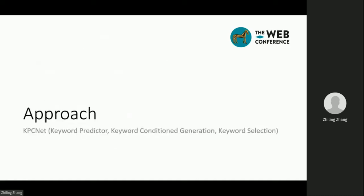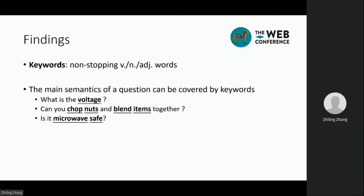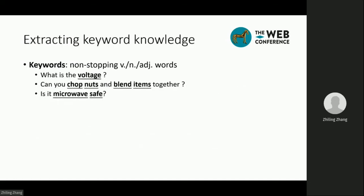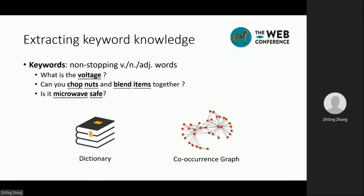Next, I am going to introduce the approach proposed in this paper. Our approach is based on findings about keywords. Here, we define keywords as non-stop verbs, nouns, and adjectives. We find that the main semantics of a question can be covered by keywords. Therefore, we hypothesize that we may control the generation with keywords as a condition, so that we can generate specific questions with specific keywords, and generate diverse questions with different keyword sets. We can extract keyword-related knowledge from the training data and find keywords from the CQs. All distinct keyword terms constitute a keyword dictionary. We also count the co-occurrence between keywords in the dictionary; the resulting co-occurrence graph will be used for keyword clustering.